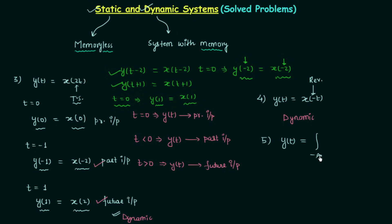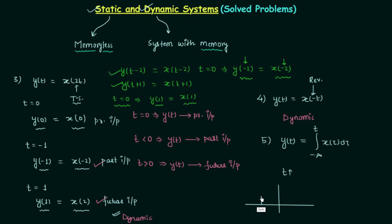Now the fifth problem: y(t) = ∫(from −∞ to t) x(τ) dτ. If you know graphical integration you can directly answer this. In graphical integration we start from minus infinity and increase the upper limit t slowly, which causes an increment or decrement in the net area. This increment or decrement depends on the past values of input, and thus this is a dynamic system. I will explain this with an example.